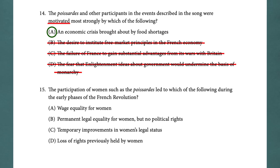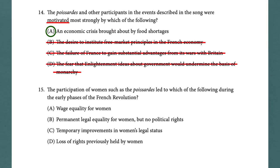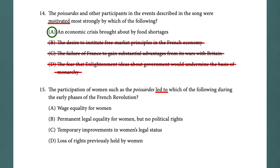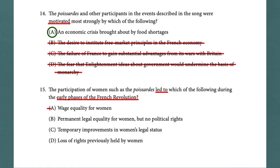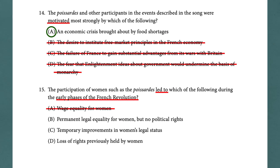The participation of women such as the Poissard led to which of the following during the early phases of the French Revolution? Always mark up your questions — when you're under pressure, you are dumber than you think, so do your thinking on the paper. I'm going to underline 'led to' — this is a causation question — and 'early phases of the French Revolution.' Remember there was a liberal phase and a radical phase. The radical phase is when heads were getting cut off; the liberal phase was not. So we're talking about the liberal phase. Was it wage equality for women? No. Permanent legal equality but no political rights? Interesting, but when Napoleon comes along, he strips a lot of that away.